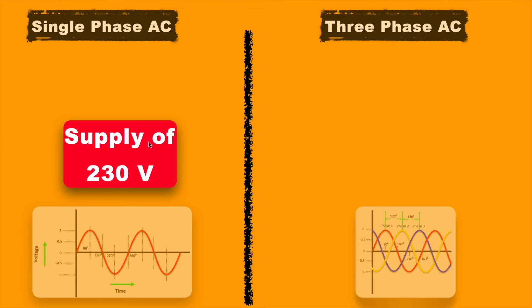The next difference: single phase power supply has 230V and 3 phase power supply uses approximately 415V.